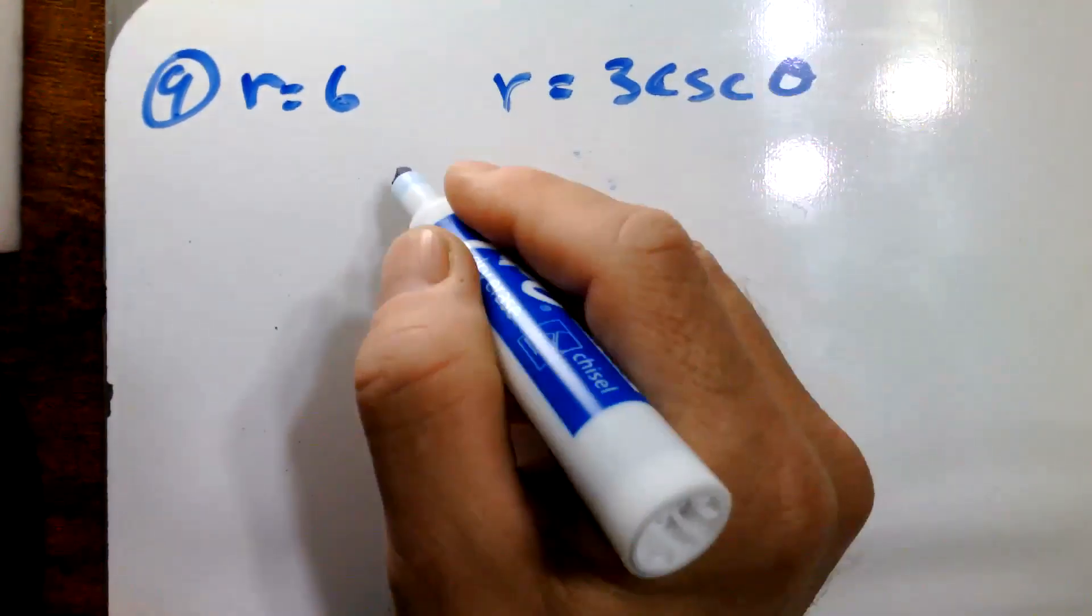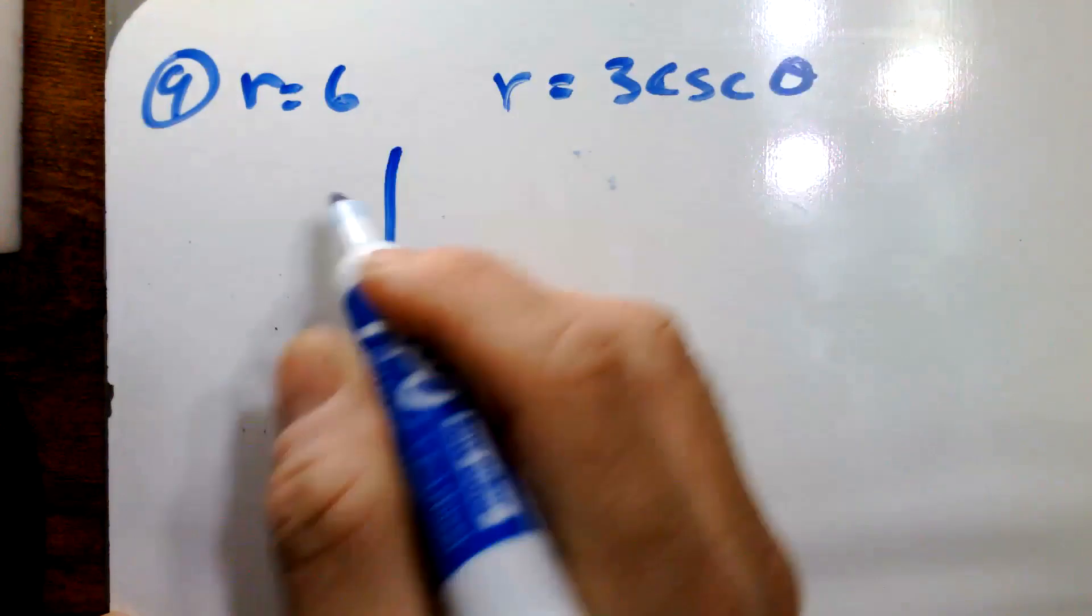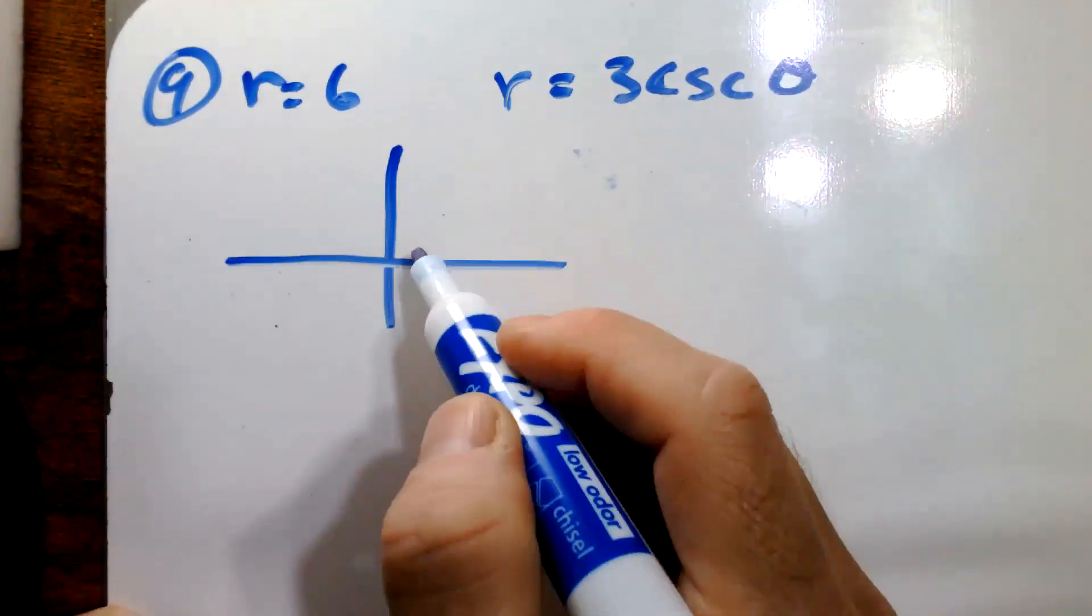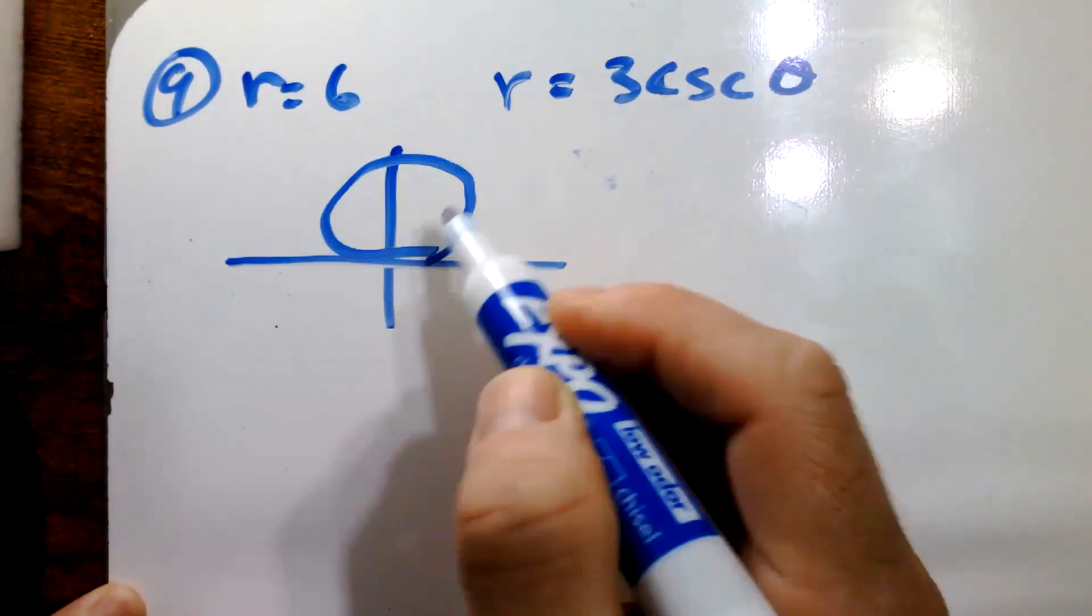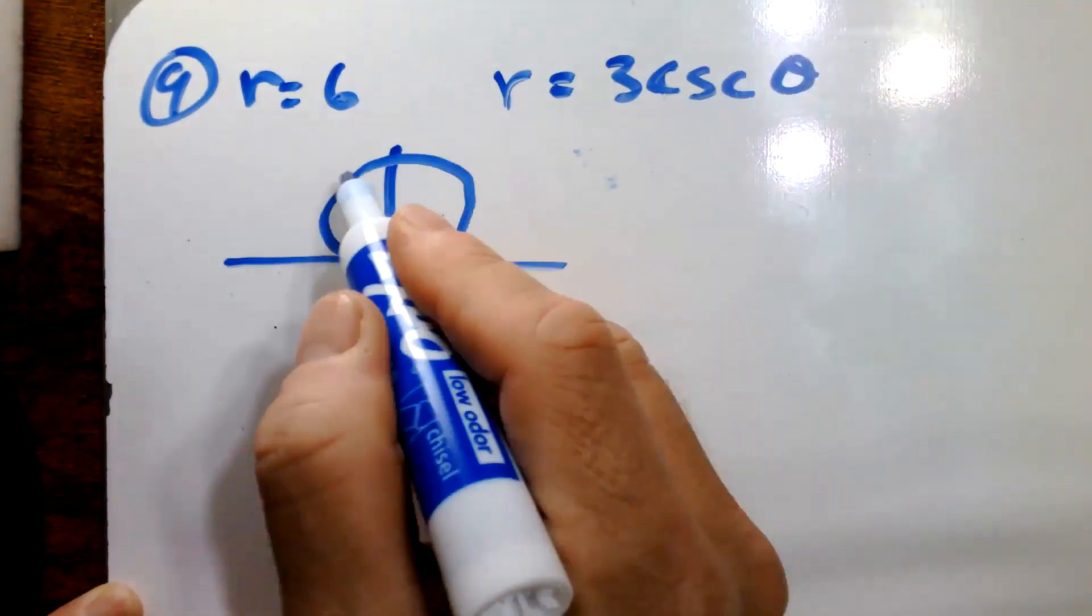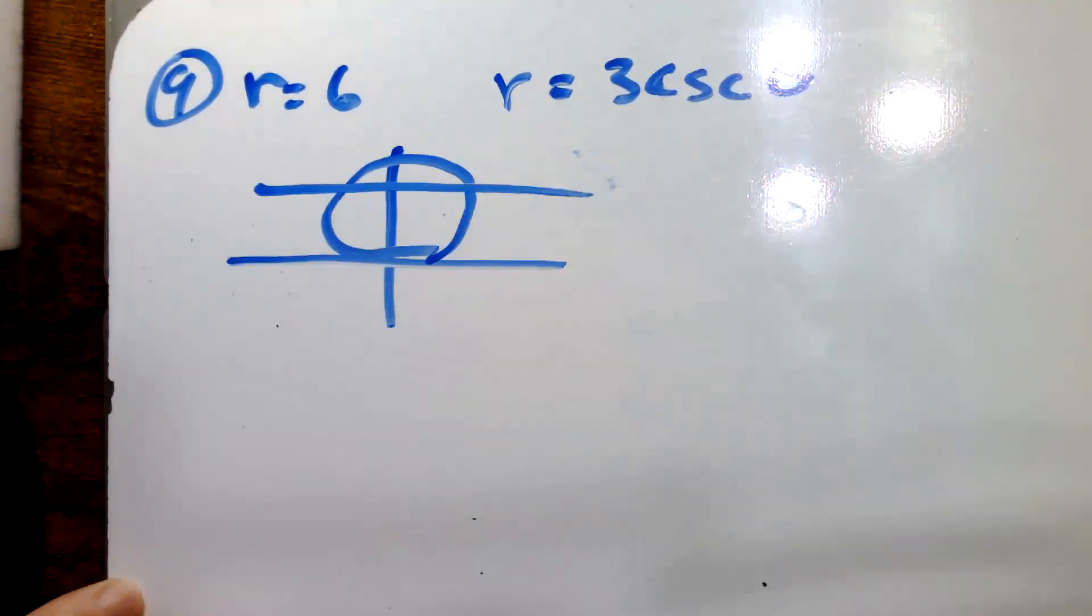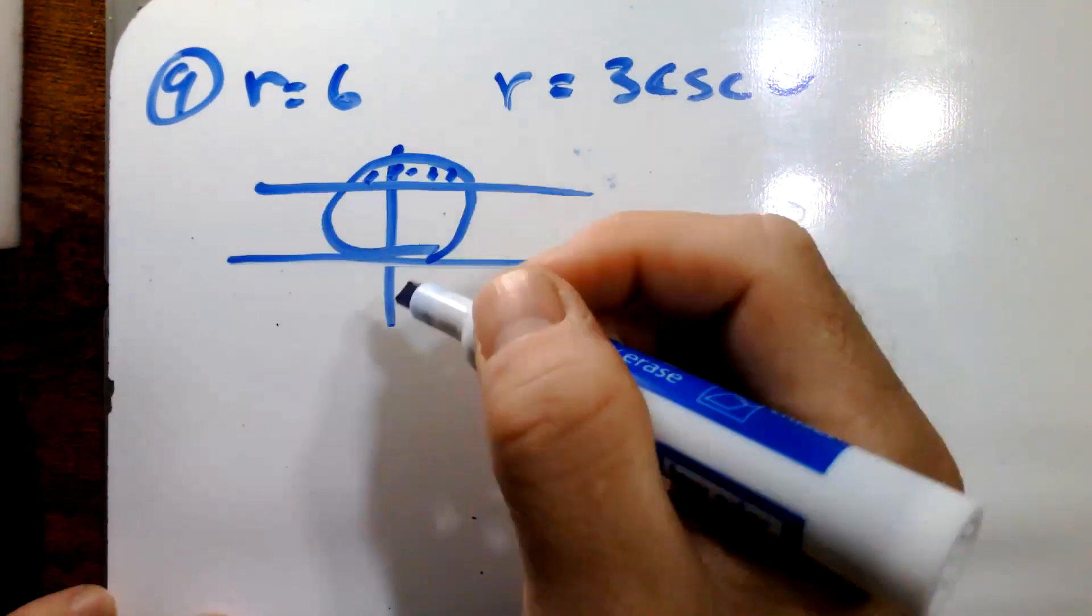It tells us that it's a circle, but you could graph it and find out for sure. So this is a circle that looks roughly like that, and then we have a graph that looks sort of like that. And so we're looking at this kind of region right here.